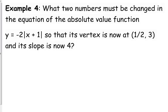Alright, so we get another example. What two numbers must be changed in this equation so that the vertex is now at 1/2, 3, and its slope is 4? So the easy thing to deal with is the y-coordinate of our vertex, right? Because we know that's just the number on the end, so we know we've got to add 3 to the end of this equation. Now we have to be a little bit more careful to fulfill the other parts, that the vertex is at 1/2 and the slope is 4.